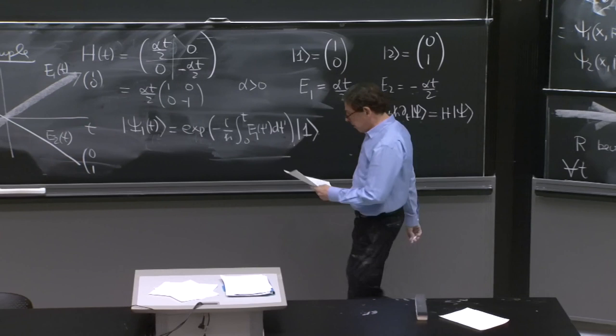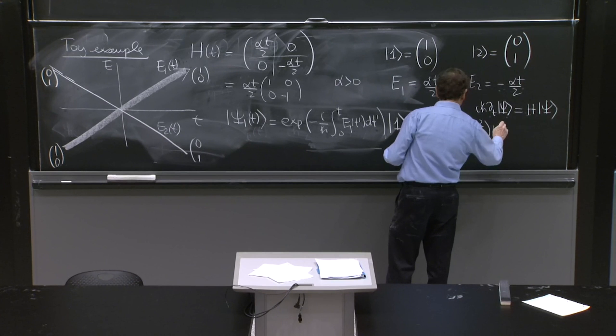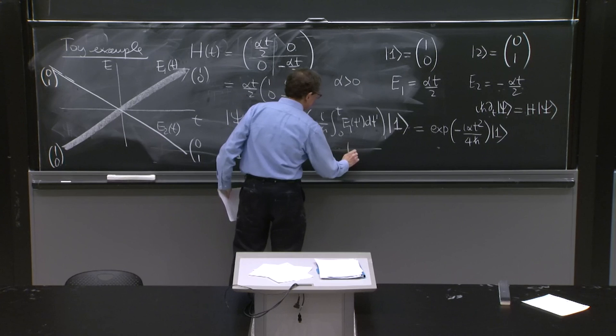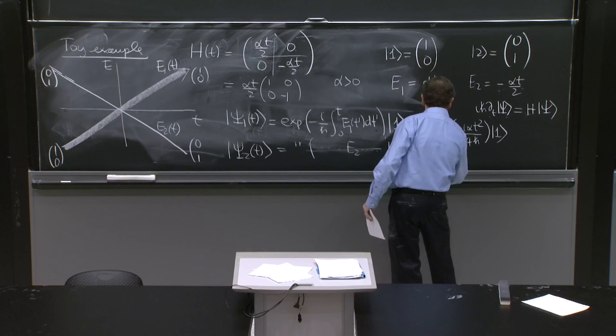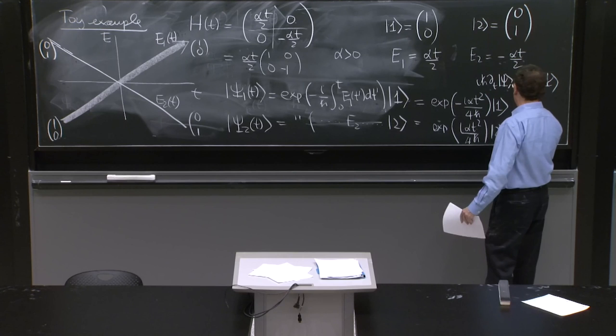It looks OK. It's the exponential of minus i α t² over 4ℏ times (1,0). And the state ψ₂ of t is the same exponential with E₂, and it's the exponential of plus i α t² over 4ℏ times (0,1).